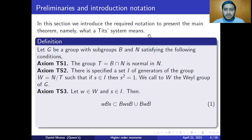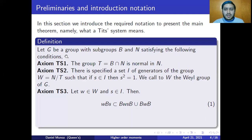For the preliminaries and notation, I need to define what a Tits system means. Let G be a group with subgroups B and N satisfying the following conditions, which are going to be called axioms. Axiom TS1 says that the group T, which is the intersection of B and N, is normal in N.